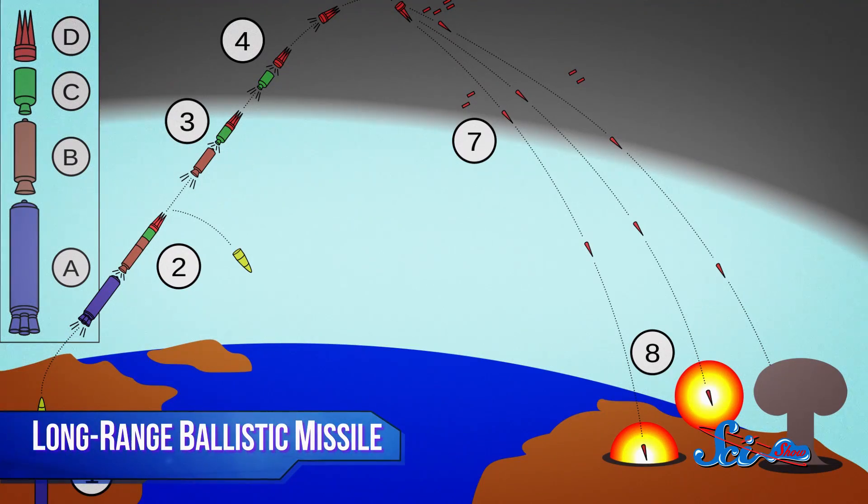Werner von Braun was an SS officer during World War II and led a team of German scientists in developing the world's first long-range ballistic missile, a military program aided in large part by slave labor at concentration camps.